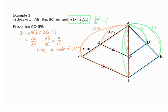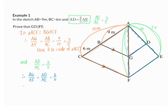My reason for this: line parallel to one side of the triangle. This proportion can also be simplified to 3 over 5. But we already know that AD over AE is also 3 over 5, because that was given to us. And that means we can say that AG over AF is the same as AD over AE. They are both 3 over 5, and because they are the same, we can make the conclusion that GD is parallel to FE. My reason: line divides two sides of the triangle in proportion.